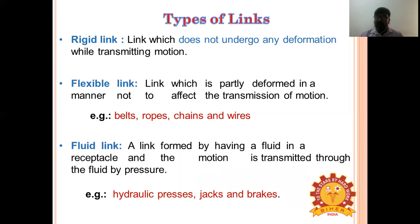A rigid link is a link which does not undergo any deformation while transmitting motion. Examples include connecting rod, crankshaft, and piston.